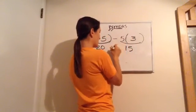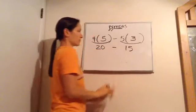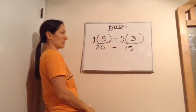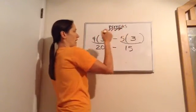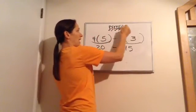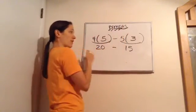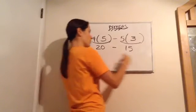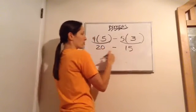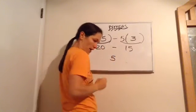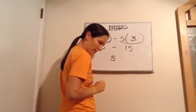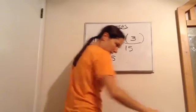Multiplying left to right: 5 × 4 = 20. Any more multiplications? Yes — 5 × 3 = 15. Bring the minus down. No division. Now add or subtract from left to right: 20 − 15 = 5. It's just that simple.